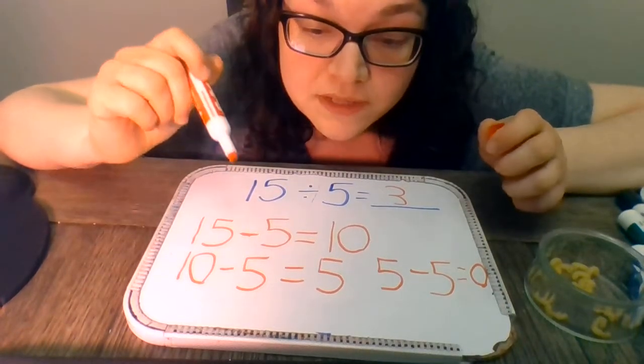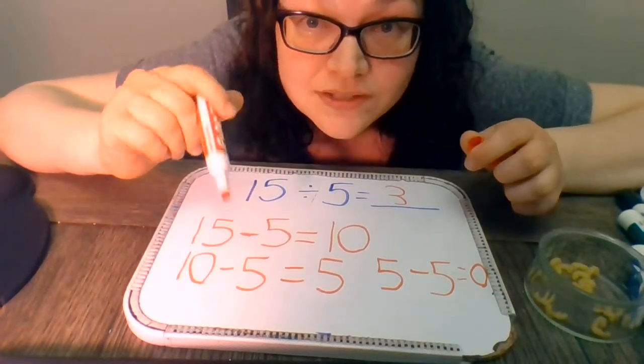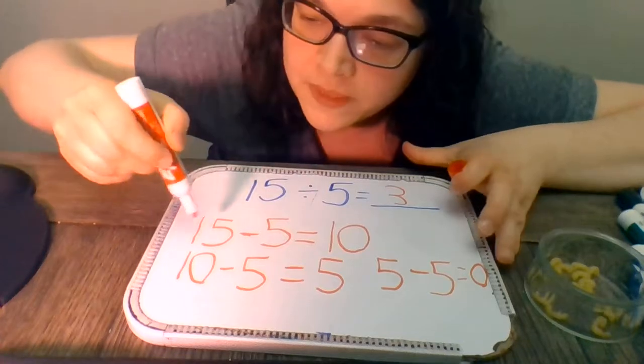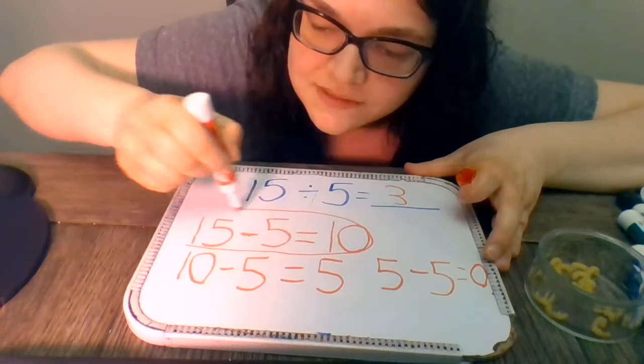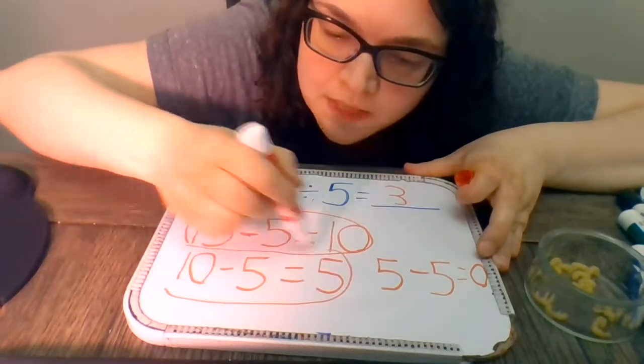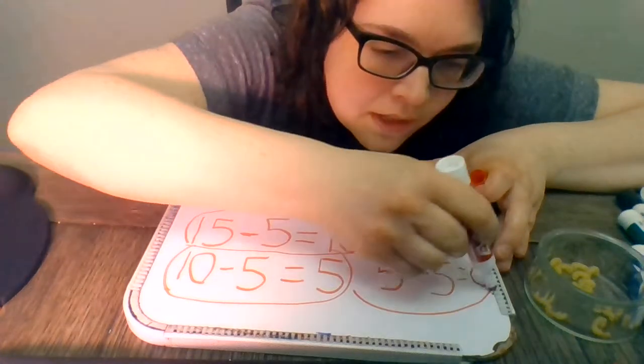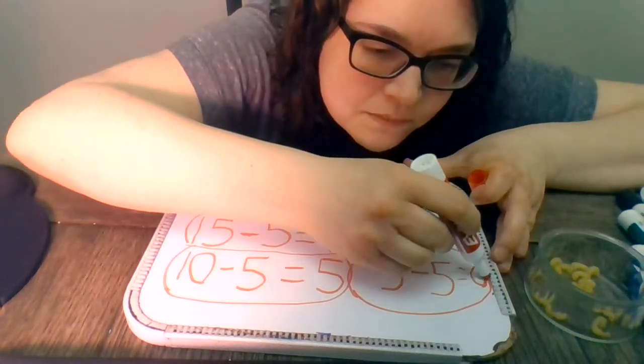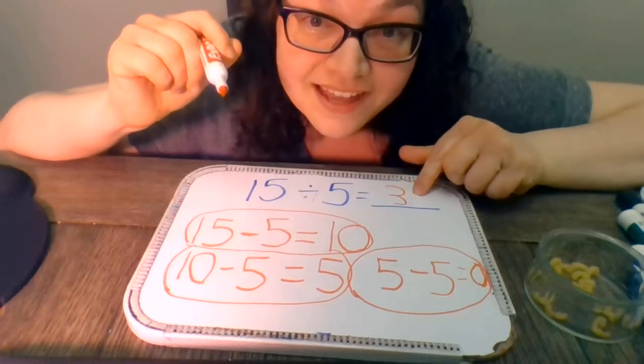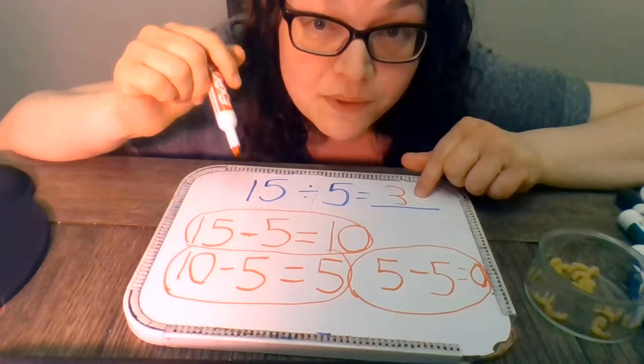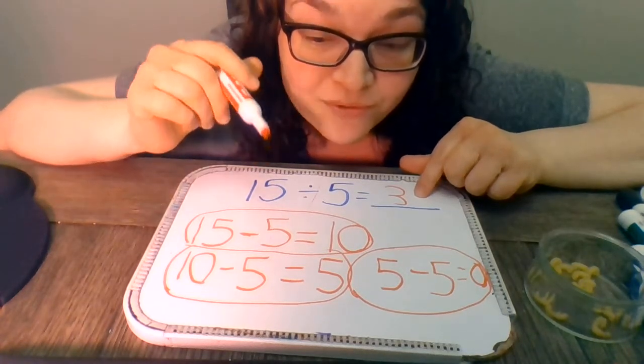So now what you do is you look and see how many questions did you have to do to get to zero. So we did this one. That's 1, 2, and then it took us three times to get to zero. So that tells us the answer, which as you can see matches what we found before, number 3.